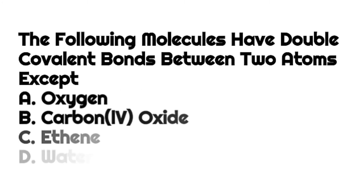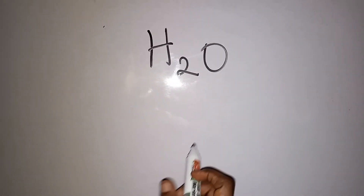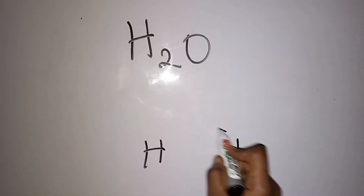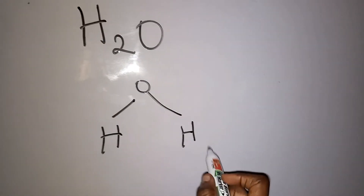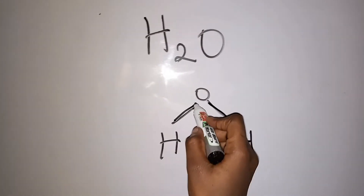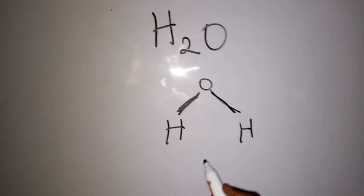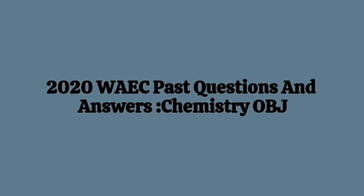The following molecules have double covalent bonds between two atoms except — a) oxygen, b) carbon dioxide, c) ethyne, and d) water. The answer is d) water. Oxygen, carbon dioxide, and ethyne all have double bonds, but water does not. The water molecule has hydrogen–oxygen–hydrogen with all single bonds, so there is no double bond in water.